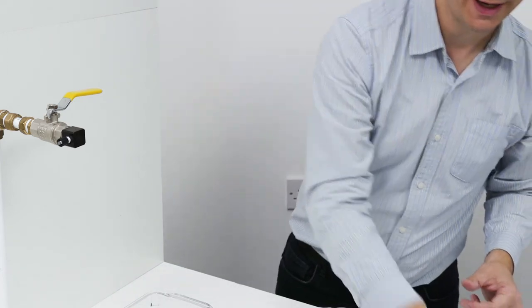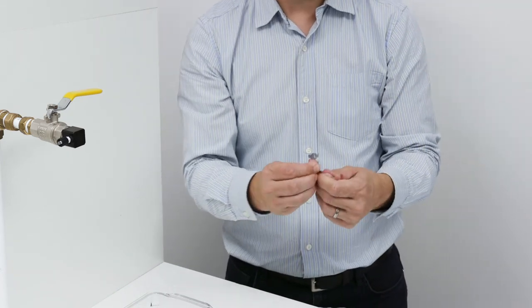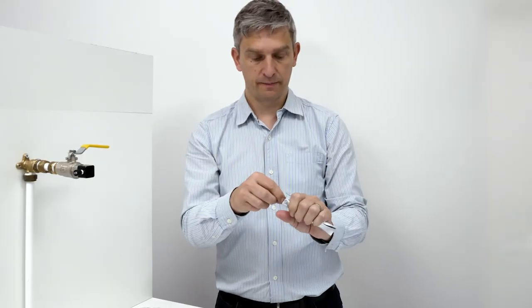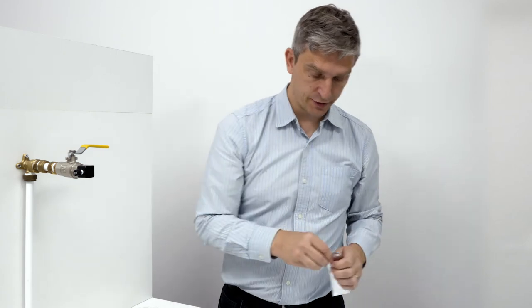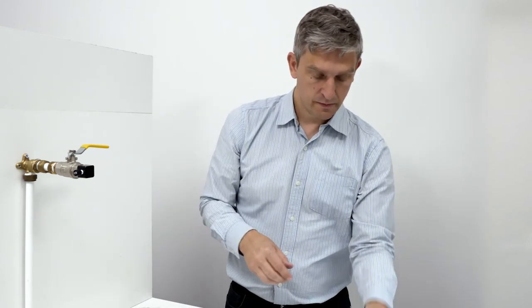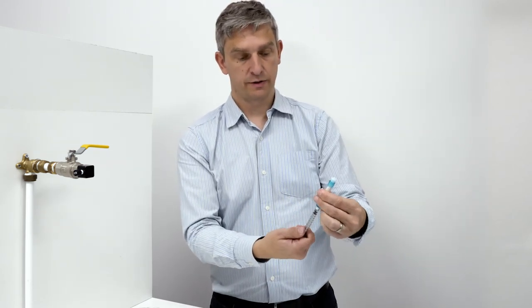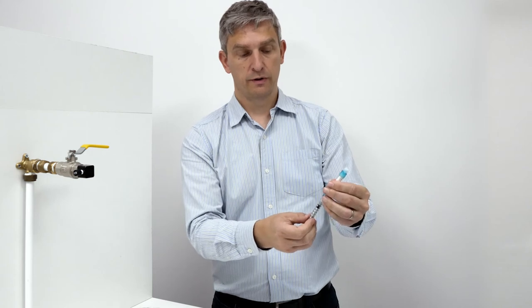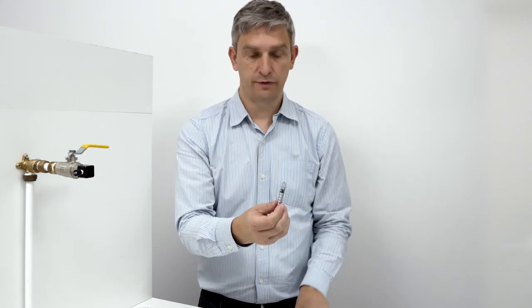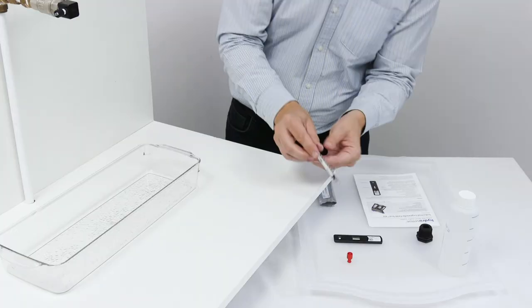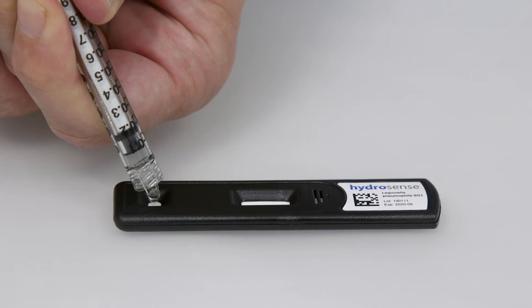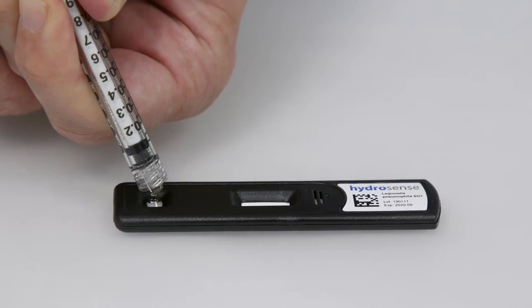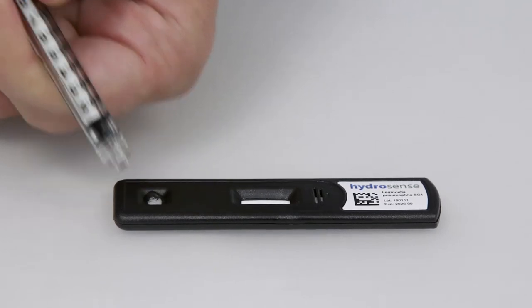We now need to open the test, and we only open the test just prior to running. Place the test on a flat surface, then detach the filter from the syringe and put the filter to one side. Then we dispense the 0.1 milliliters onto the test strip. Ensure that all the sample is dispensed onto the test strip.